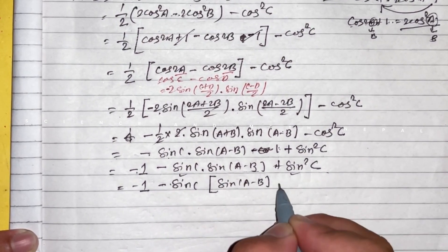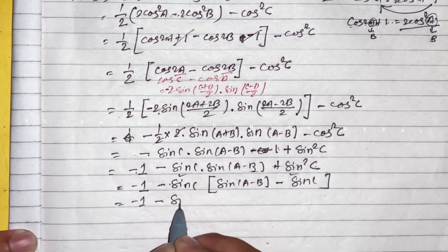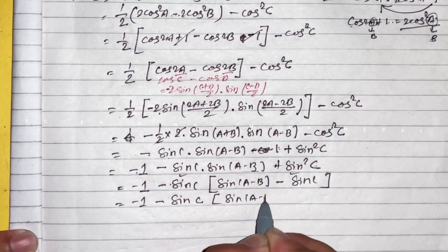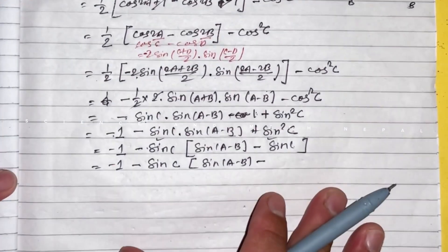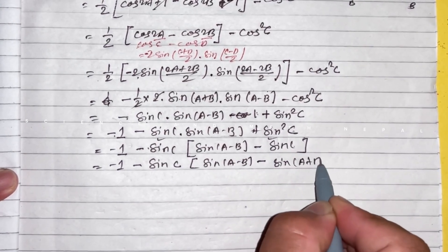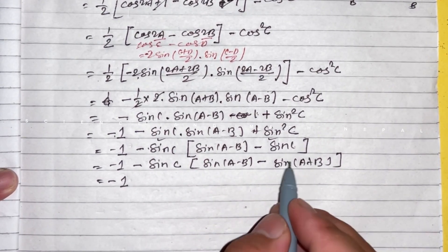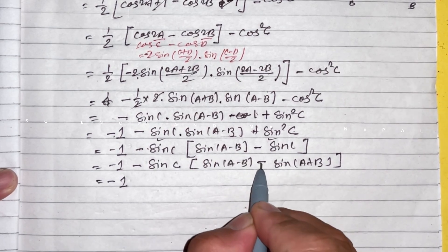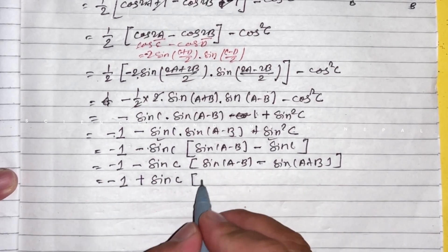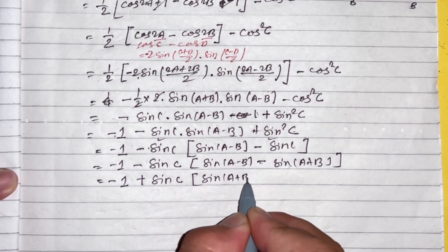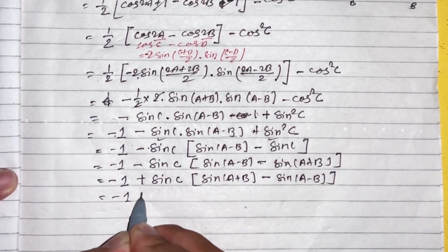Expanding further: minus sin c sin(a minus b) plus sin c sin(a plus b) minus 1. Using sin(a plus b) minus sin(a minus b) equals 2 cos a sin b, the expression becomes minus 1 plus 2 cos a sin b sin c.